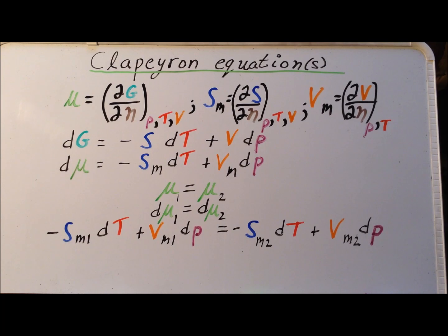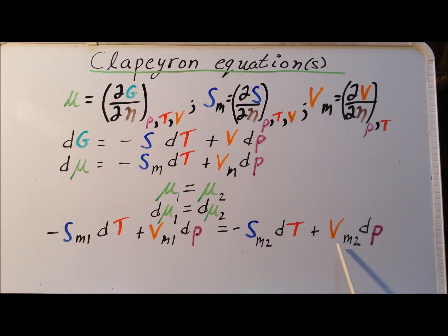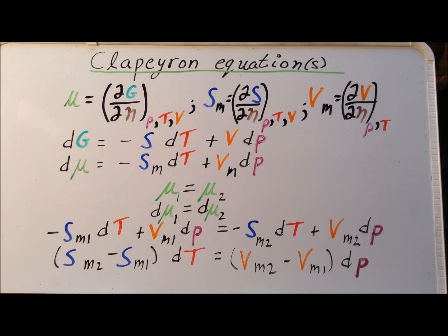Specifically for each of the phases, we have that minus S sub M1 (the partial molar entropy for phase 1) dT plus V sub M1 (the partial molar volume for phase 1) dP equals minus S sub M2 dT plus V sub M2 (the partial molar volume for phase 2) dP. We then rearrange terms to collect them, giving us the quantity S sub M2 minus S sub M1 times dT, equal to the quantity V sub M2 minus V sub M1 times dP.